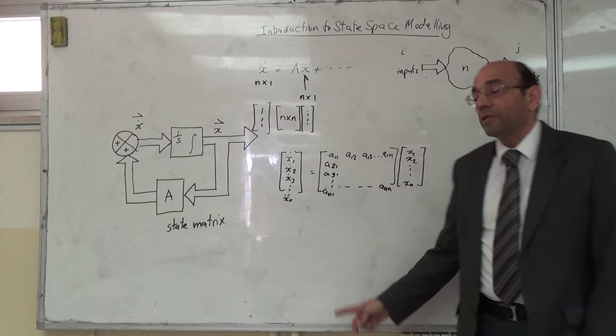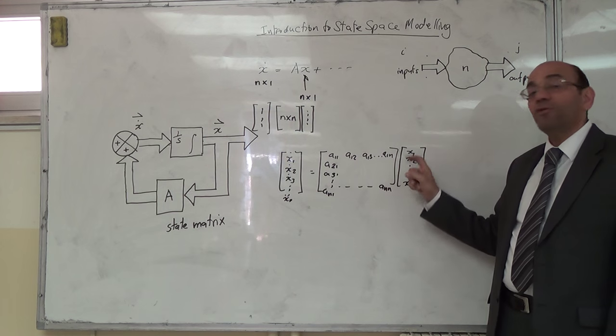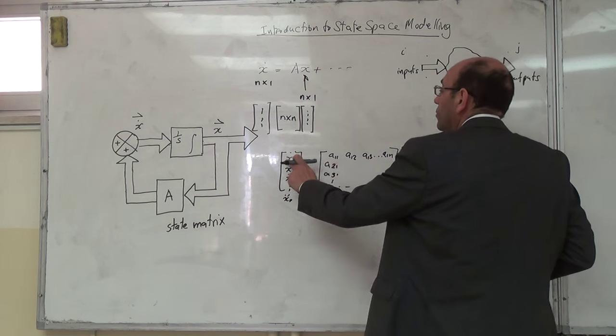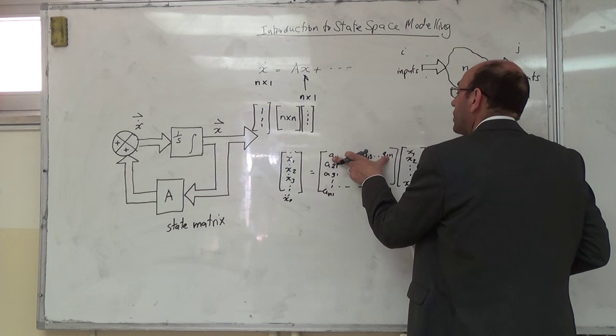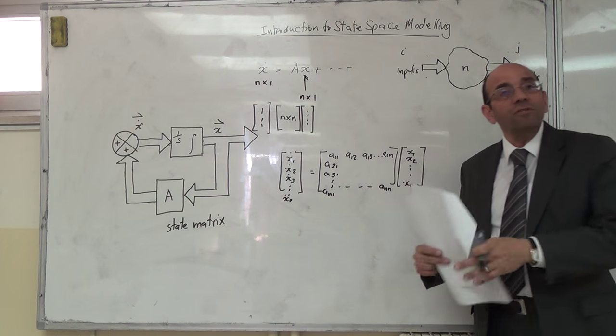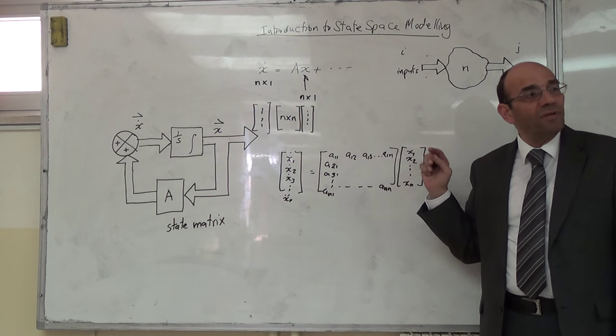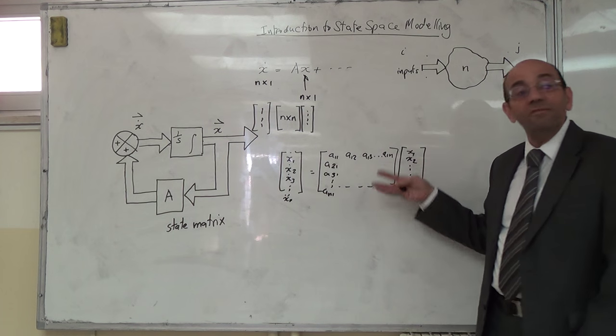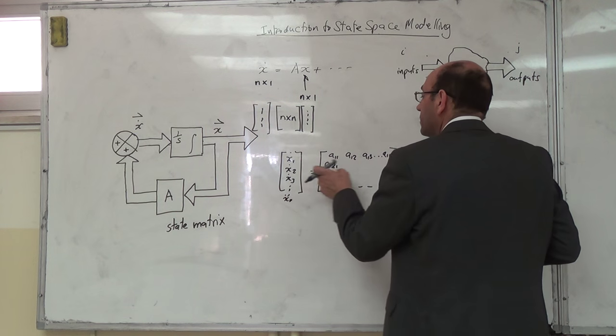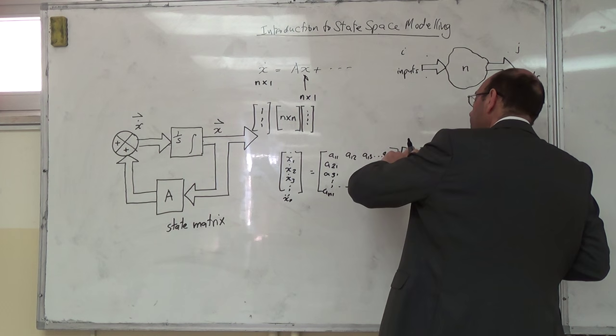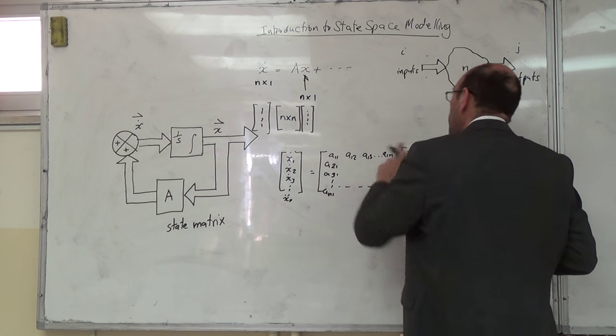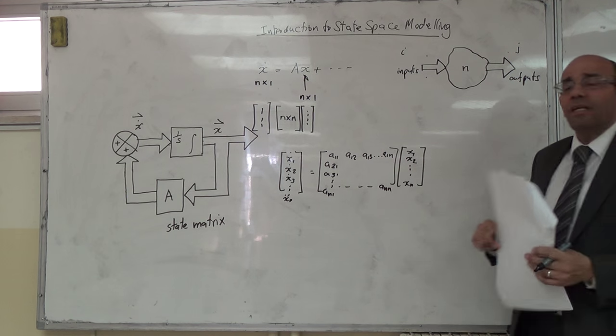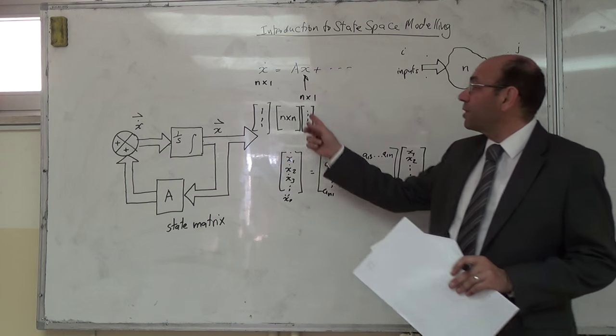ماشي الكل فاهم هاي؟ x2 شو بتساوي؟ تساوي a21 في x1 زائد a22 في x2 إلى آخره. يعني عمالي بقول إنه هذا الألمنت يساوي معادلة. فمحظو x1 ما بتعتمد بس على x1، بتعتمد على x2, x3, xn. ممكن تكون هاي كل الماتريكس فيها أرقام. و x3 رح تكون الرو الثالث مضروب فيه هاي كلها. هاي هي state equation. لازم تكون n by n.